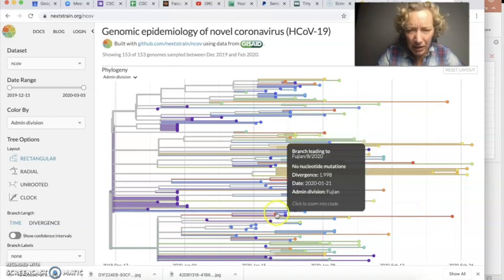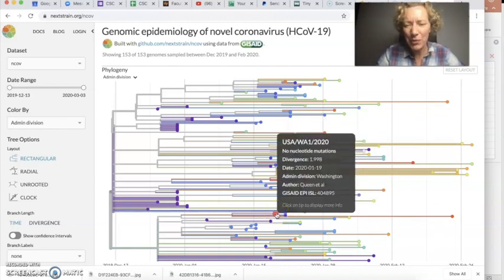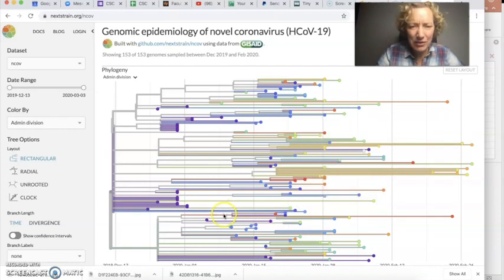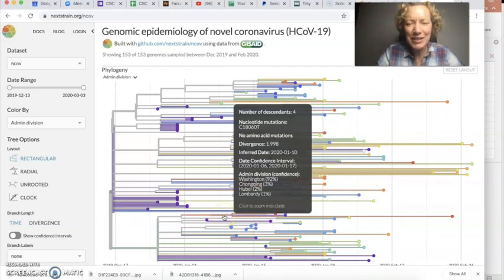And so here is the WA2 sample. And here is the WA1 sample. And so there's this branch that they share. And if I hover over that branch, it says nucleotide mutations, C18060T.